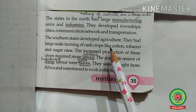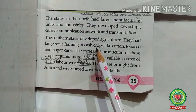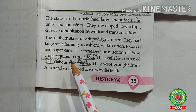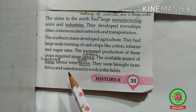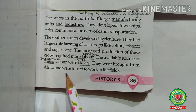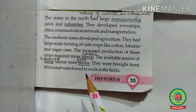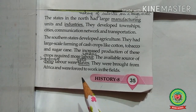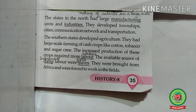The Southern states developed agriculture. They had large-scale farming of cash crops like cotton, tobacco, and sugar cane. Cash crops are commercial crops grown to be sold in the market for profit. The increased production of these crops required more labor. The available source of cheap labor were slaves, brought from Africa and forced to work in the fields. Cotton was in great demand due to the establishment of textile mills. For growing cotton and other cash crops, more workers were required, brought from Africa and given less wages.